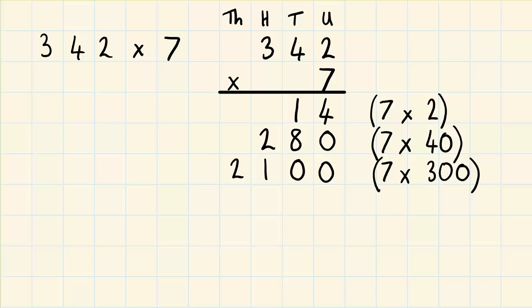So now we've worked out our partitions. So now we've got to add up our answers. So the units column is a 4, tens column 9, hundreds column 3, and the thousands column 2. So the answer to 342 multiplied by 7 is 2,394.